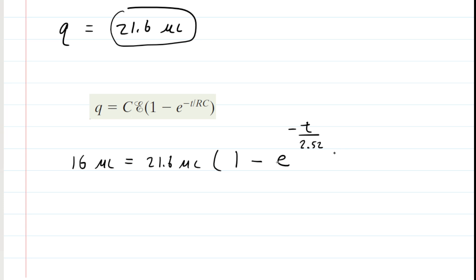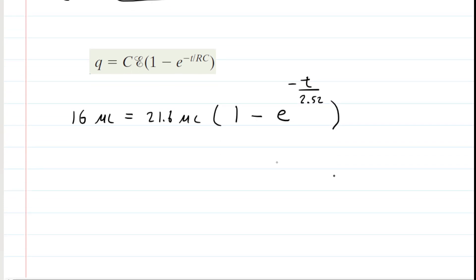So now it is a matter of solving for the time t. And to do that, we're going to divide both sides by the 21.6 micro coulombs. And doing so cancels the 21.6 on the right side. On the left side, we have 0.741 approximately. And that is equal to that other term.